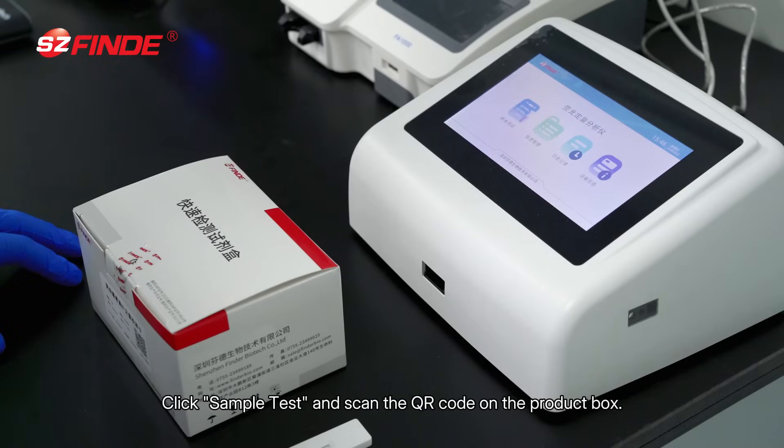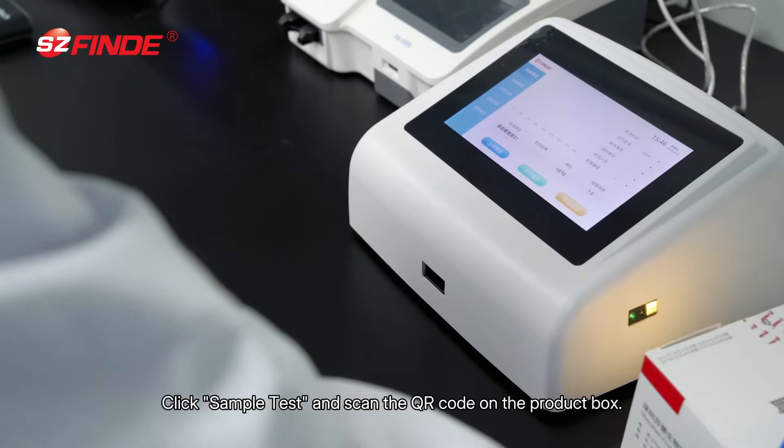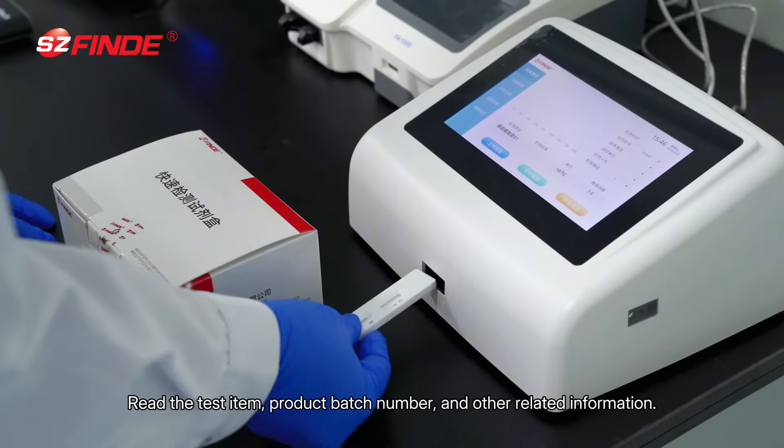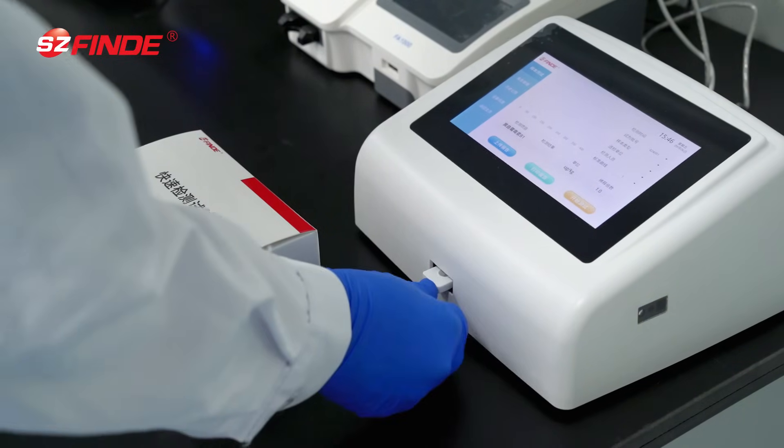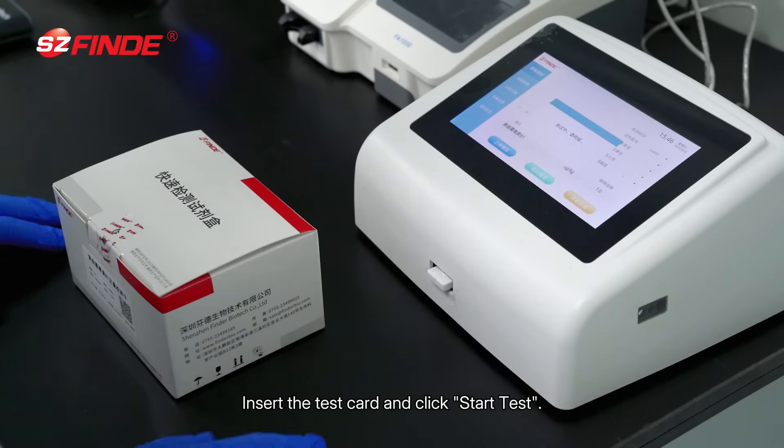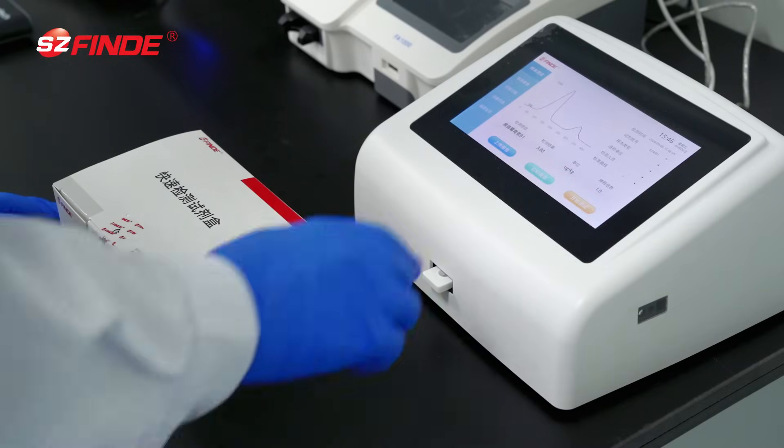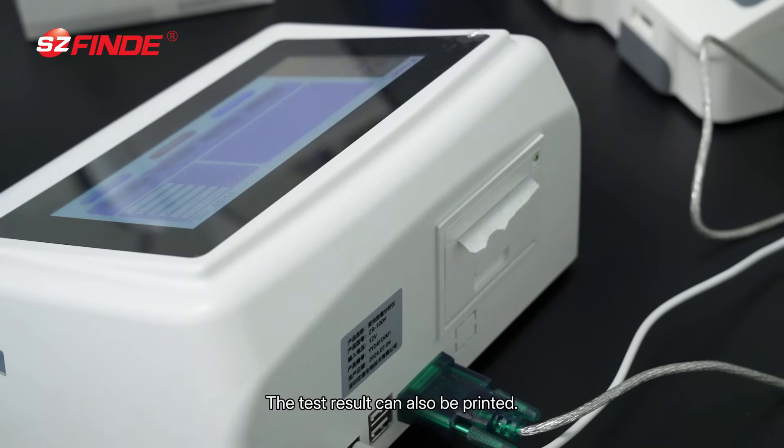Click sample test and scan the QR code on the product box. Read the test item, product batch number, and other related information. Insert the test card and click start test. The test result is automatically displayed on the screen and can also be printed.